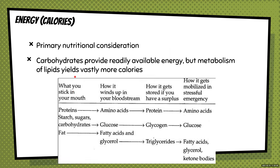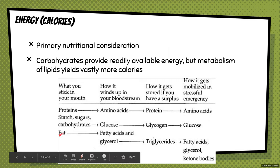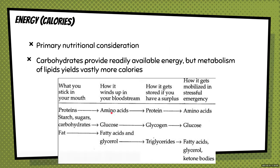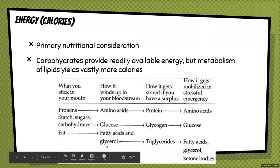On the left is what you stick in your mouth — what do you eat? You eat protein, starches, sugars, carbs, and fat. That is the form that you eat. How it winds up in your bloodstream is as amino acids, glucose, fatty acids, and glycerol. These are the very basic components of these nutrients.